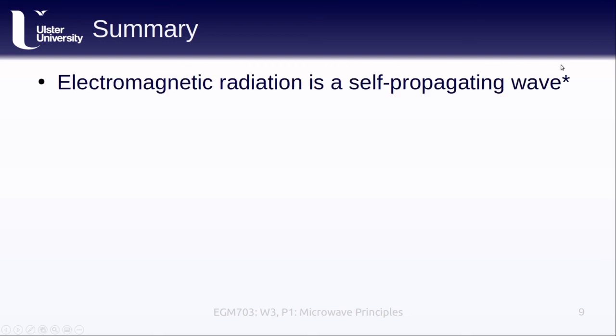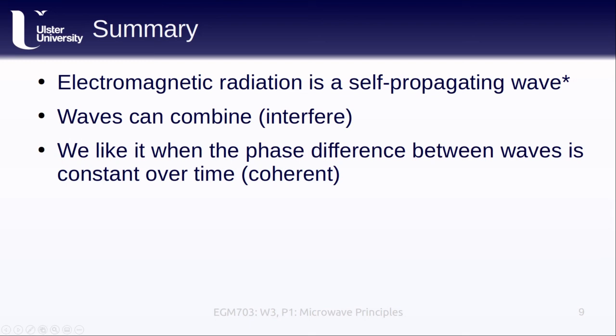In this lesson, we've recapped how electromagnetic radiation is a self-propagating wave, and we'll explain what we mean by this a bit more in the next lesson. We saw how we can combine or interfere different waves, and how this can be easier to visualize if we think about waves as complex numbers. Finally, we've covered how life is much easier when the phase difference between waves is constant over time, a property known as coherence.